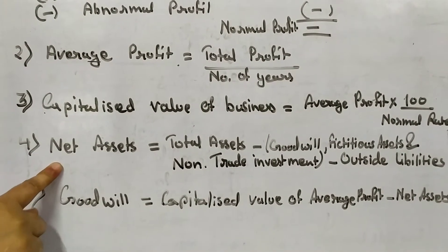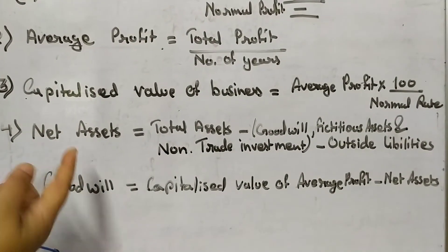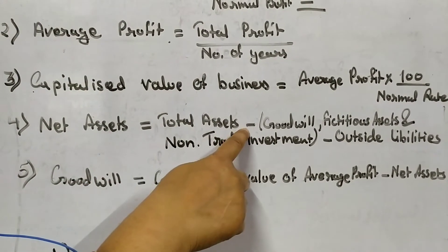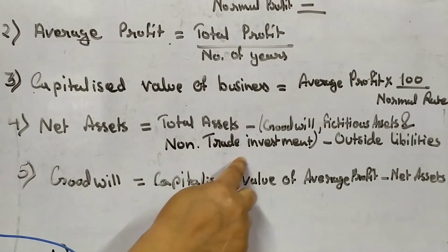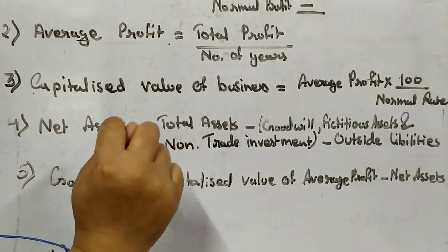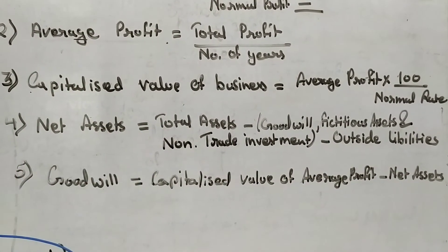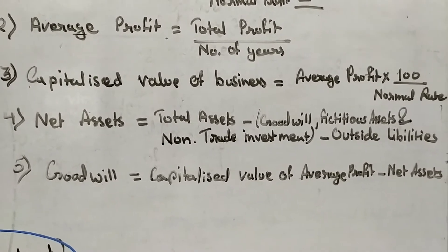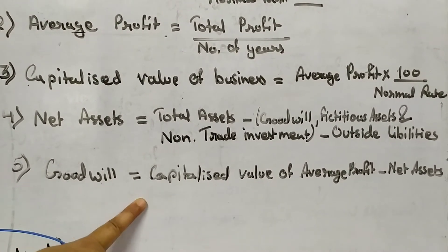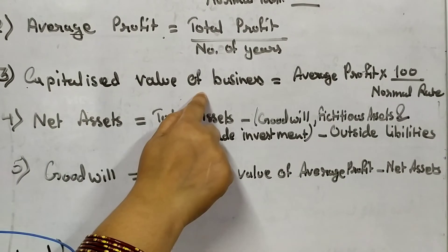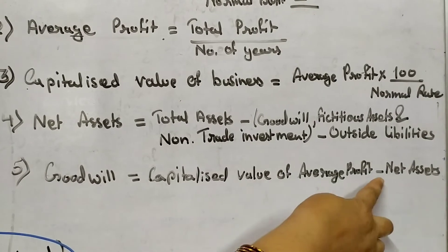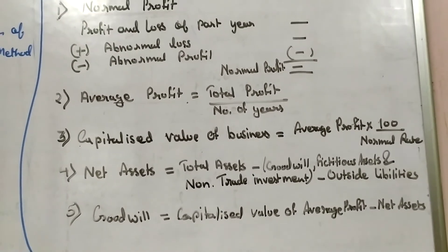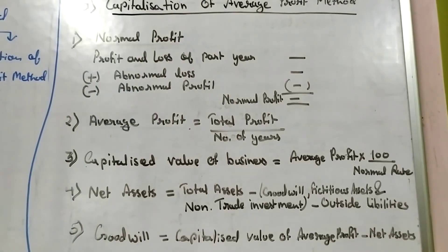In the fourth step, we calculate net assets. Its formula is the same as calculation of capital employed — total assets minus three types of assets: goodwill, fictitious assets, and non-trade investment — and then we deduct outside liabilities. In the fifth step, goodwill equals capitalized value of average profit minus net assets. In this way, we evaluate goodwill using the Capitalization of Average Profit Method.